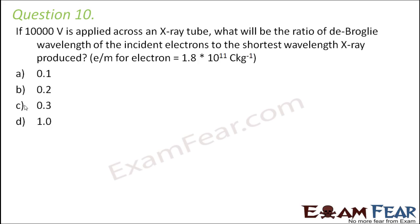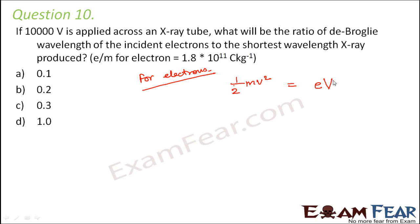The charge by mass ratio for the electron is 1.8 × 10¹¹ C/kg. First let us talk about the electrons. The energy, that is the kinetic energy of the electron, will be equal to charge into the potential difference across the tube. From this we can say V² = 2eV/m. We have to find the ratio of wavelength of electrons and wavelength of X-rays. From de Broglie hypothesis, the electron wavelength is λ = h/mv.